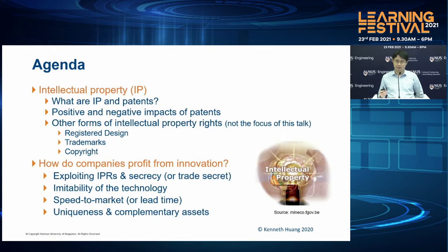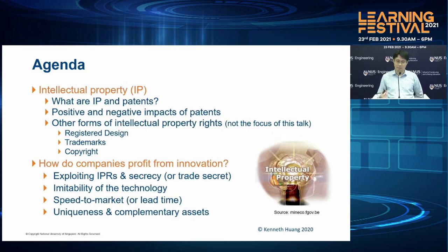The second part of the talk will get into the do's and don'ts: how should companies profit from innovation? How can we exploit IPR and secrecy or trade secrets? What about the imitability of the technology? If we cannot protect a technology invention by IPR, can we go to market quickly — known as speed to market or lead time? What if all the above fail? Can we use complementary assets? Today's talk will explore all these important topics.